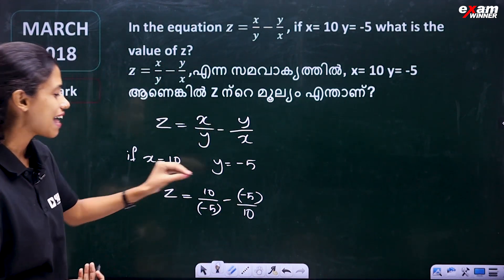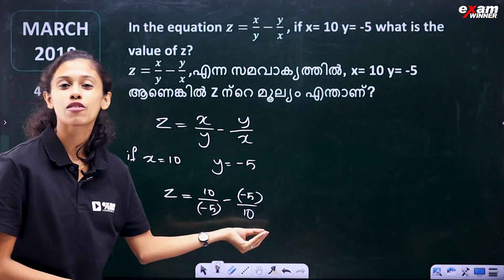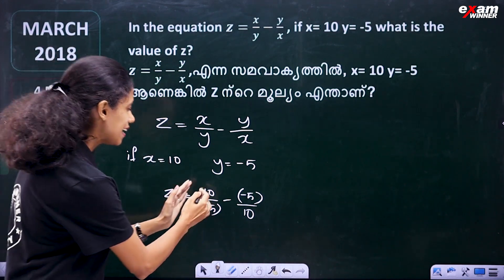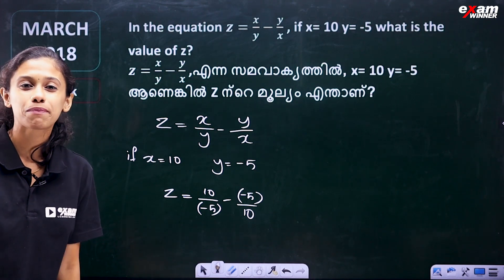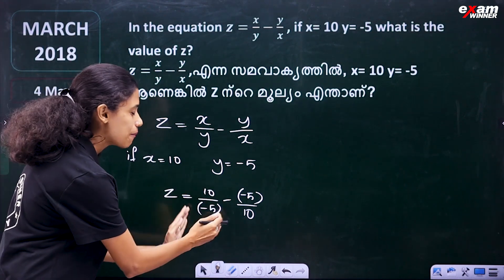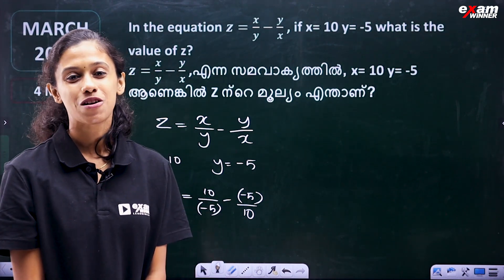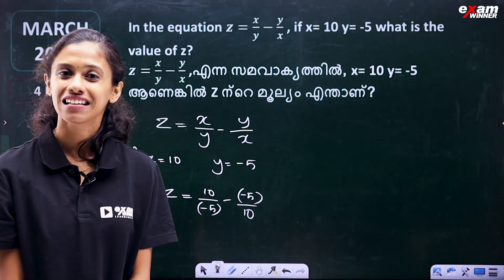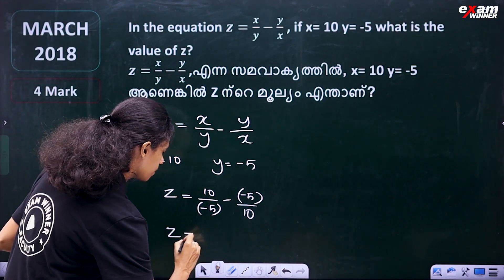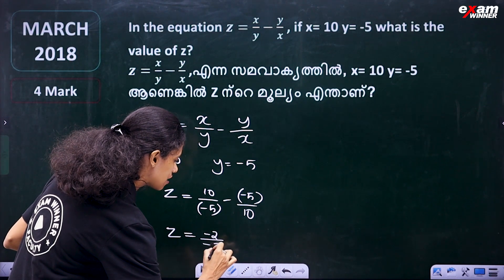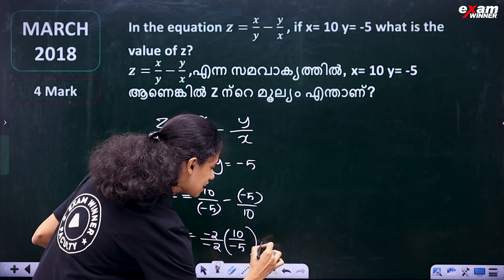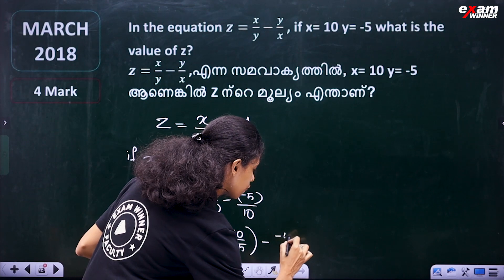You can see the answer here. The denominators are 10 and minus 5. To make the denominators equal to 10, we multiply minus 5 by minus 2. So we write minus 2 divided by minus 2, into 10 by minus 5.